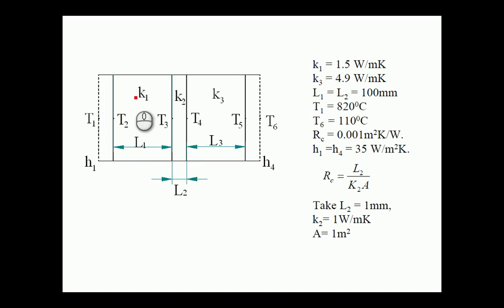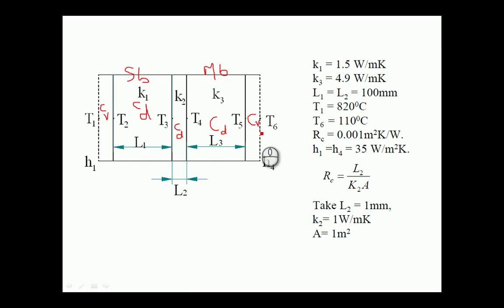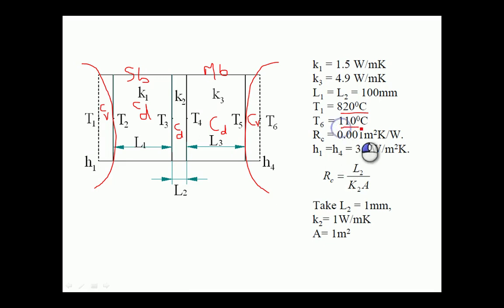The problem diagram shows silica brick and magnesia brick. Convection is present on the inner surface side, followed by conduction through the silica brick, then conduction through the contact resistance, then conduction through magnesia brick, and finally convection on the outer surface. The fluid in contact with the inner surface is at 820 degree centigrade and the fluid at the outer surface is at 110 degree centigrade.